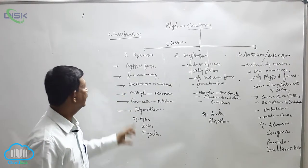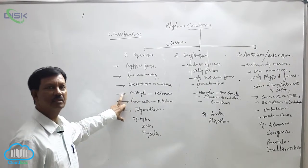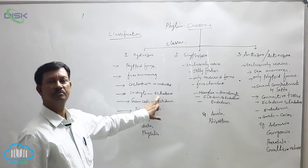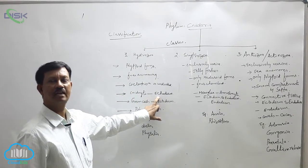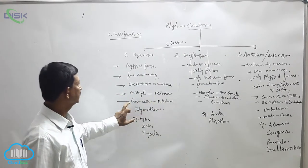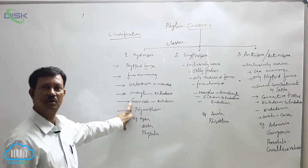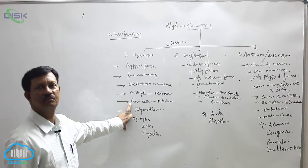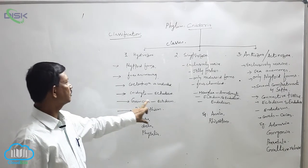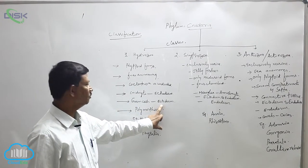Cnidocytes, the stinging cells, are present only in the ectoderm and are absent in the endoderm. Germ cells — the reproductive cells, which are the sperms and female gametes — are also produced from the ectoderm only.